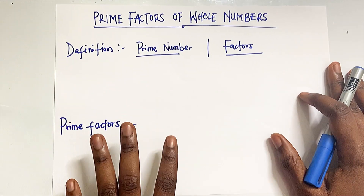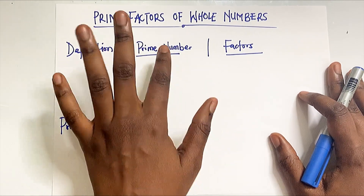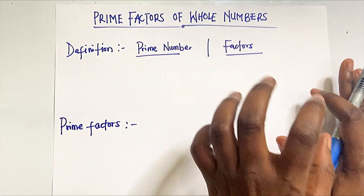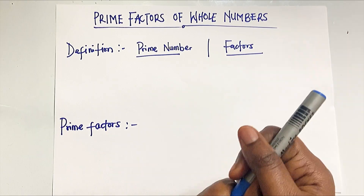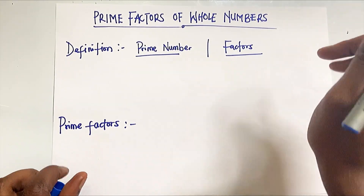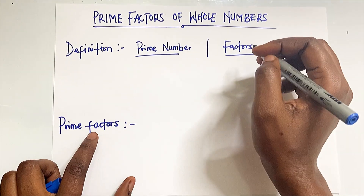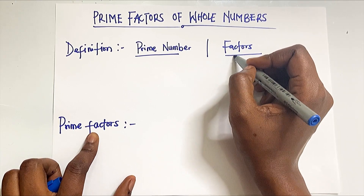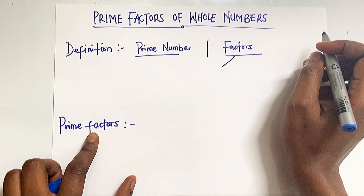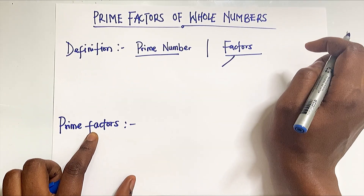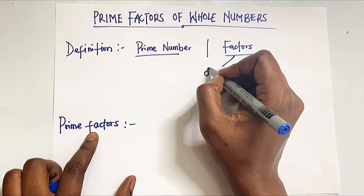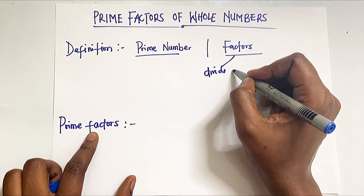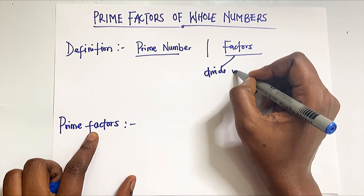For us to really understand the definition of prime factors, we have to break this down into prime numbers and factors. If you've watched the previous video — I'll put a link if you haven't — a factor is simply a number that can go into another number seamlessly. That means it's a number that can divide another number without leaving a remainder.